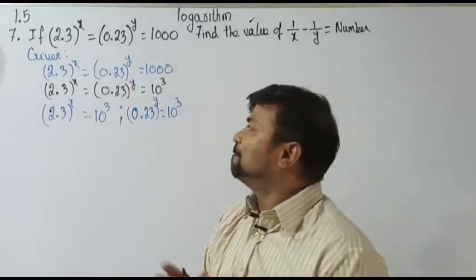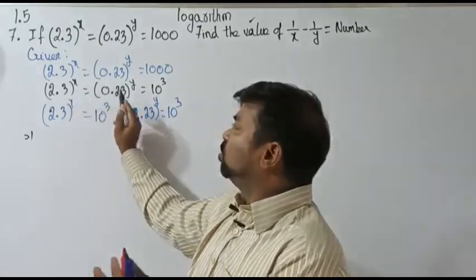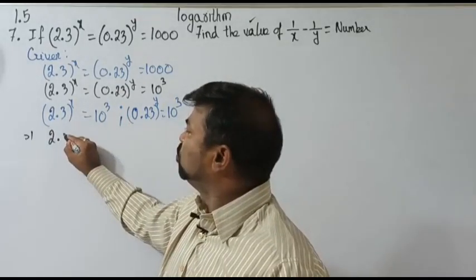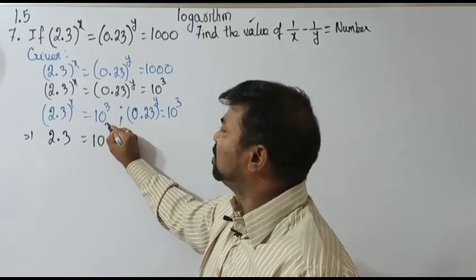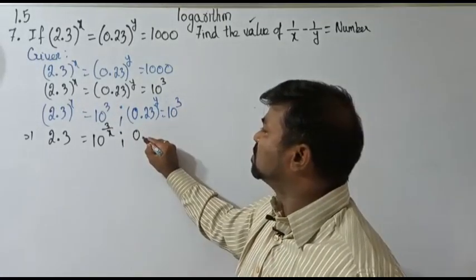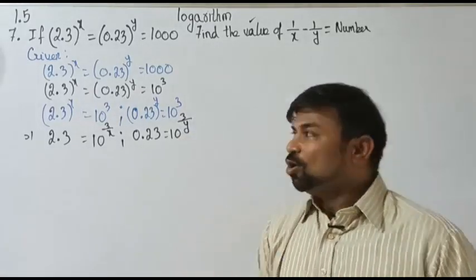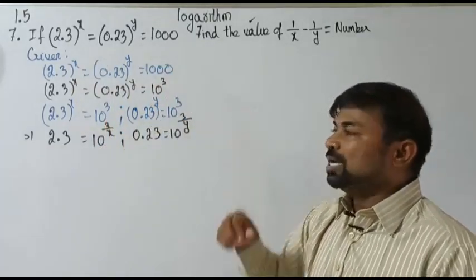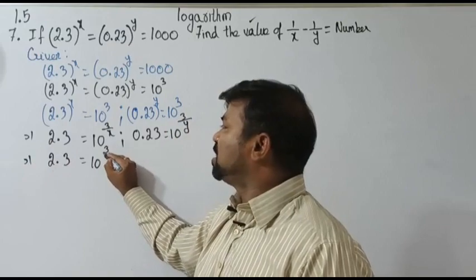Then step by step, I want the variable shifted to the other side. If I send x to the other side, 2.3 equals 10 to the power 3 by x. In the same way, if I send y to the other side, it becomes 0.23 equals 10 to the power 3 by y. The x that was present transposed to give 3 by x, and y transposed to give 3 by y.